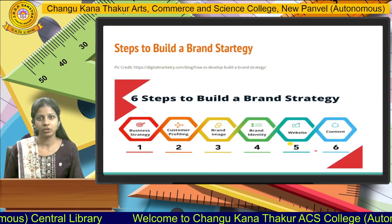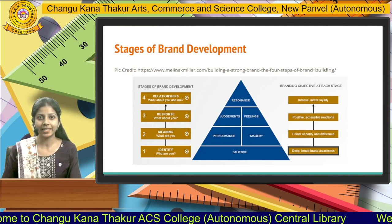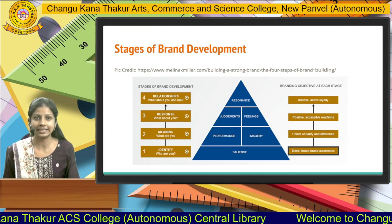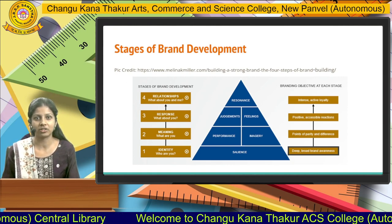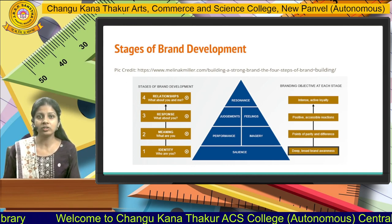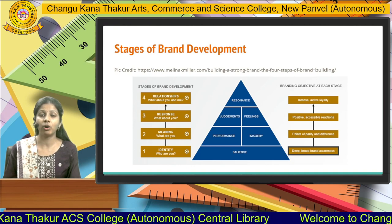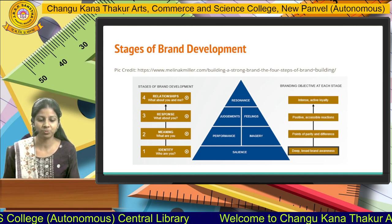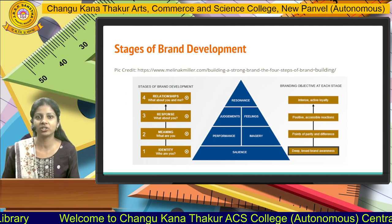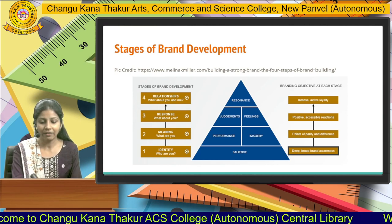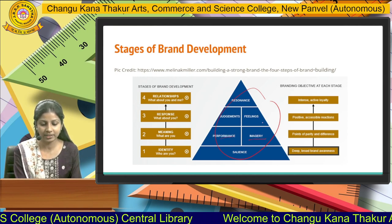Now we have stages of brand development. How does your branding process start? First is identification — you have to identify your product, whether the product is built upon certain characteristics. Then meaning — what all things are required for the branding process. Then response — who will use that product and what response can be received. Then relationship — what type of relationship you have to maintain with the different stakeholders. There is also a pyramid defined as salience, performance, imagery, feelings, judgment, and resonance — parameters used to identify a brand.